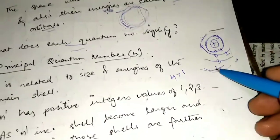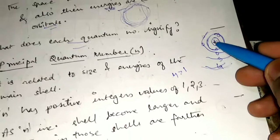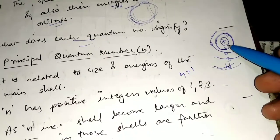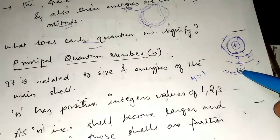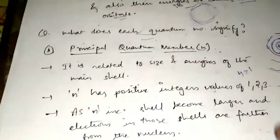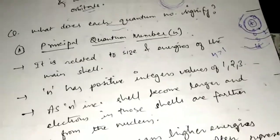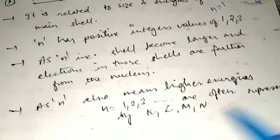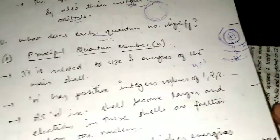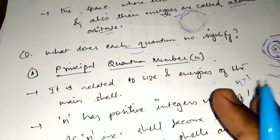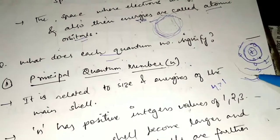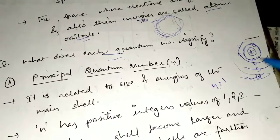As more shells are added, electrons become farther from the nucleus, so there is less force of attraction from the nucleus to the electrons. This means it will be easier to remove the outermost electron from the nucleus. A higher N also means higher energy levels. The principal quantum number gives us the size and energy of the main shell — the more shells, the larger the size of the atom.